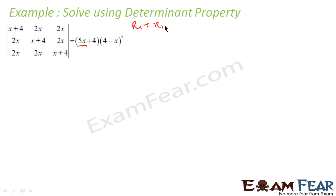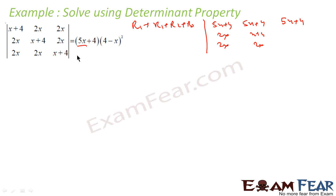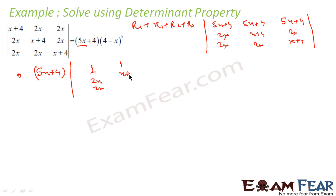R1 is nothing but R1 plus R2 plus R3. What I get is 5x plus 4, 2x, 2x. I rewrite the other rows unchanged. Now let me take out 5x plus 4 from R1. So I have 5x plus 4 as a factor, and R1 becomes 1, 1, 1. To get more zeros, I'll subtract: C1 equals C1 minus C2, giving 1 minus 1 is 0 in R1, and 2x minus x plus 4 gives x minus 4; 2x minus 2x gives 0.